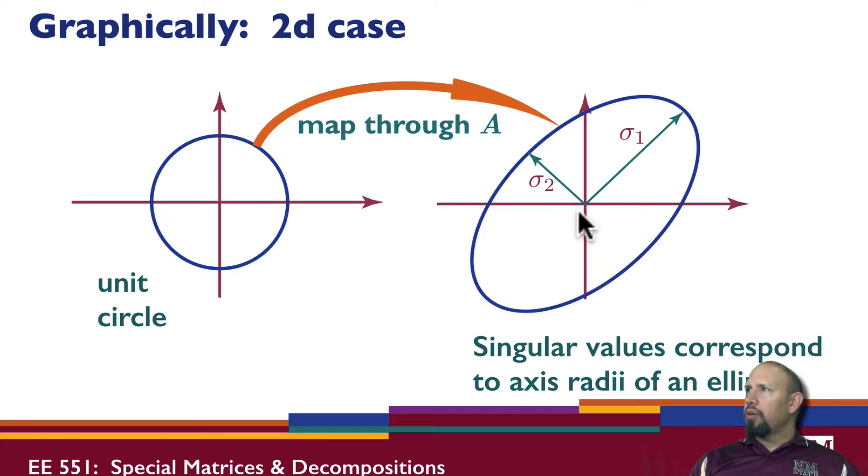So a circle in the input space maps into an ellipse in the output space. The largest singular value will be the major axis of that ellipse, and the smallest singular value will be the minor axis of that ellipse. So I will not only have a singular value, but I will also have a vector associated with that. So the singular values and the singular vectors have significance in this way, in this mapping.